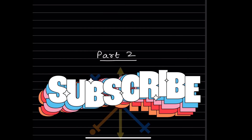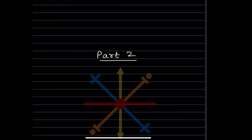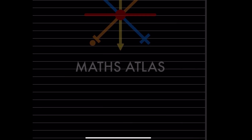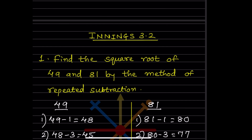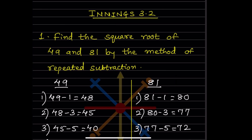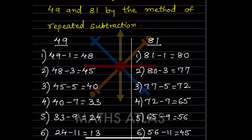Hi learners, welcome back to my YouTube channel. Today let us see Part 2 of the same topic. We will look at Exercise 3.2, the first question: find the square root of 49 and 81 by the method of repeated subtraction. Let us see how to do repeated subtraction.